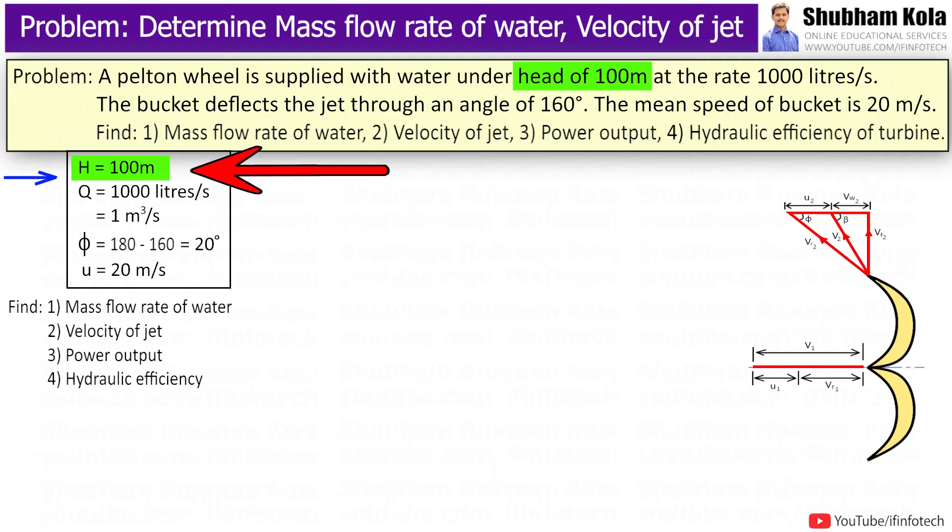Where net head H equals 100m, discharge to nozzle Q equals 1000 liters per second, and to convert this in meter cube per second, I will divide it by 1000.